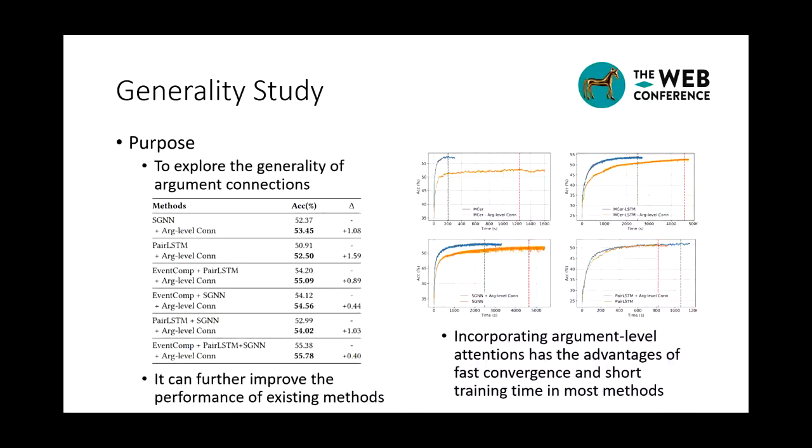As the mechanism of modeling argument-level connections are not fully exploited in previous works, we would like to explore the generality of this mechanism in terms of event prediction accuracy and convergence rate. We take two well-performing baselines and apply the masked self-attention at argument-level into it. We found that modeling argument-level connections can further improve the performance of existing methods and has the advantages of fast convergence and short training time in most methods. Both results show that modeling argument-level connections is model agnostic that can be potentially applied to a variety of event representation learning methods.